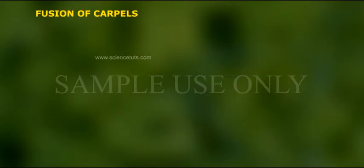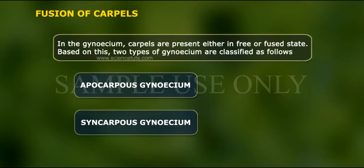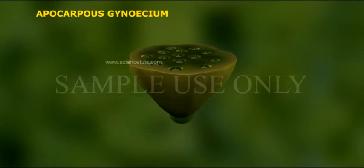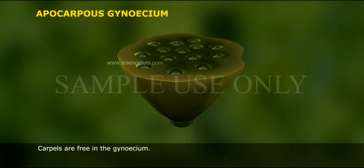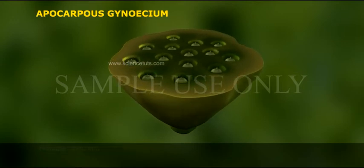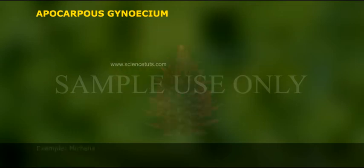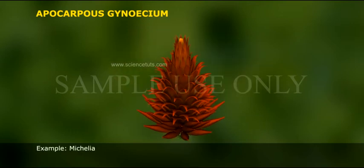Fusion of carpels. In the gynoecium, carpels are present either in a free or fused state. Based on this, two types of gynoecium are classified. Apocarpous gynoecium: carpels are free in the gynoecium. Example: Michelia.